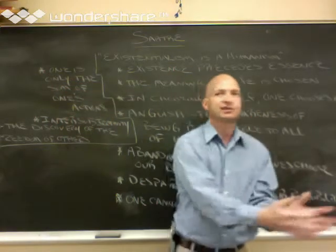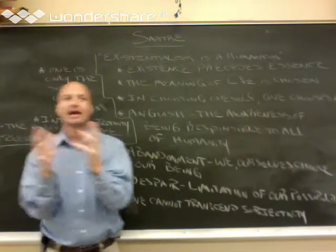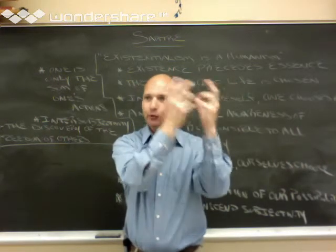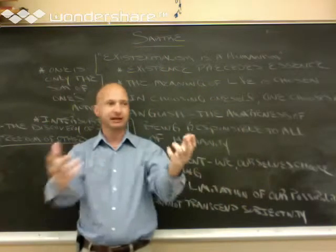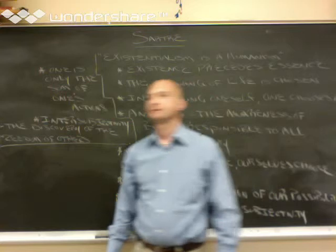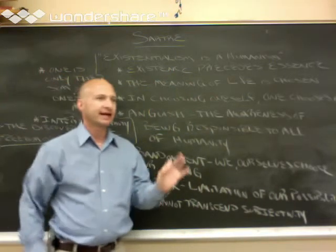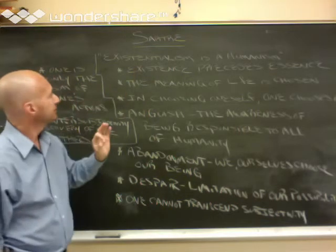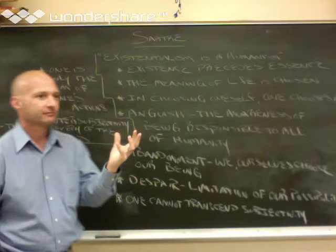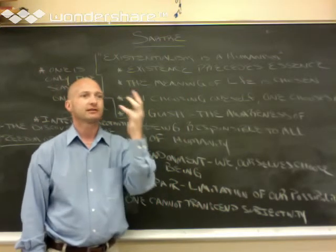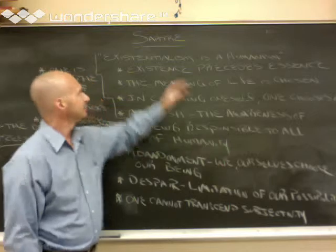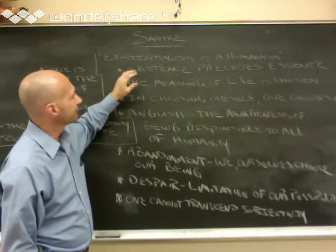We are so radically free that we ourselves choose our essence in existing. So, whereas Plato would say, look, anything which exists has a pre-existing essence in the form. The form comes first, and that which participates in the form exists as a copy of that essence. Existentialism, as it is articulated by Sartre, reverses the order of existence and essence. Plato would say that the essence of things precedes the particular existence of things that exemplify that essence. But for the existentialists, first, we exist.